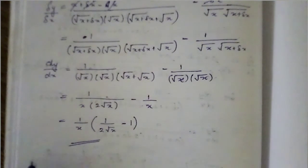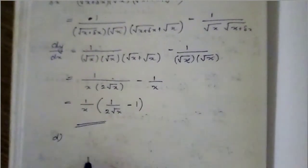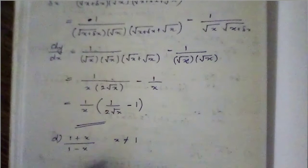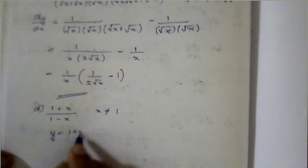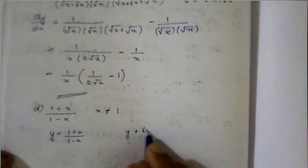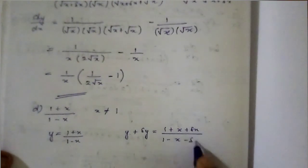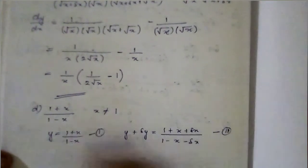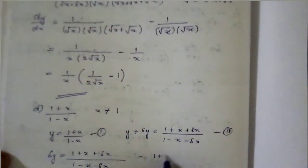Let us move to part D: root of (1 + x) by (1 minus x), where x is not equal to 1. We write y equals root[(1 + x)/(1 - x)] as the first equation. Then y plus del y equals root[(1 + x + del x)/(1 - x - del x)] as the second equation. Subtracting equation 1 from equation 2, del y equals root[(1 + x + del x)/(1 - x - del x)] minus root[(1 + x)/(1 - x)].